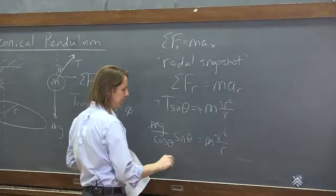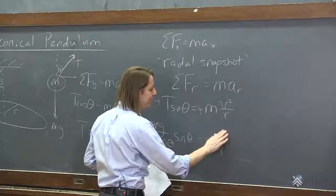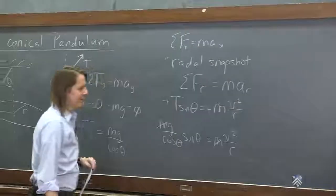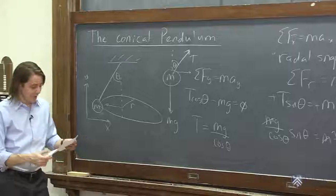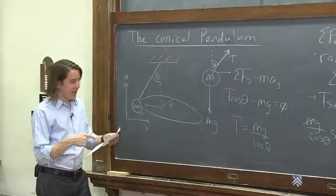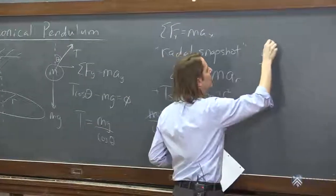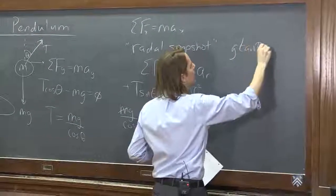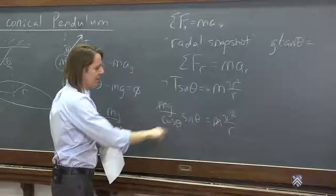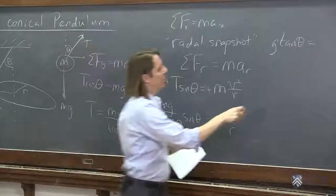The m's cancel. So then we keep going, and we say g sine over cosine is tangent. g tangent theta equals v squared over r.